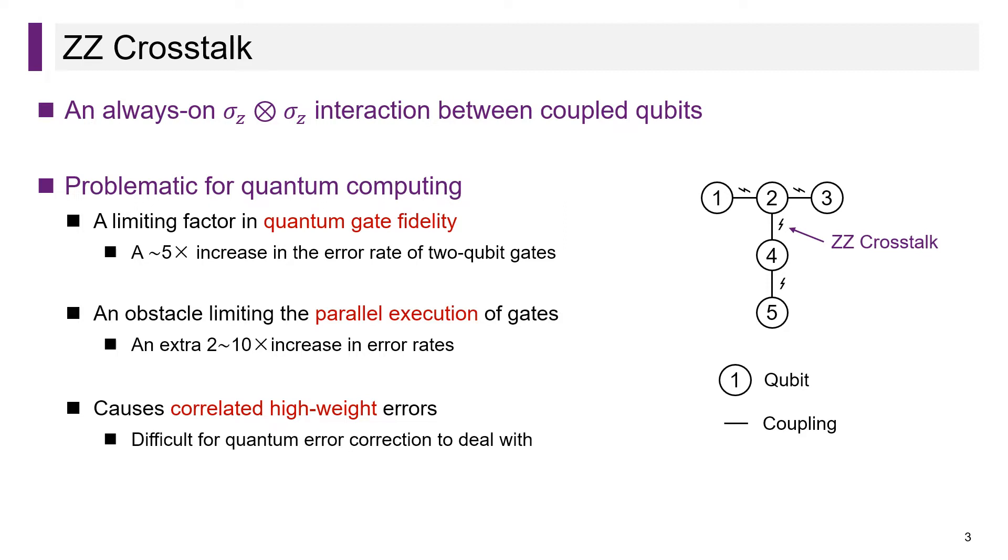ZZ crosstalk can affect quantum computing in several ways. It is often a limiting factor in quantum gate fidelity. When performing multiple gates simultaneously, it will further increase the error rate of each gate. ZZ crosstalk can also cause correlated high-weight errors, which are difficult even for quantum error correction to deal with. Thus, it is crucial to find an effective approach to tackling ZZ crosstalk.